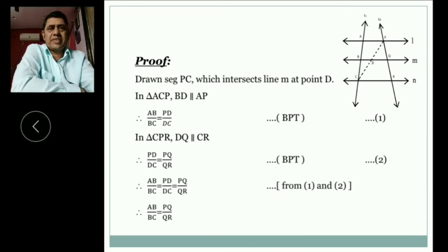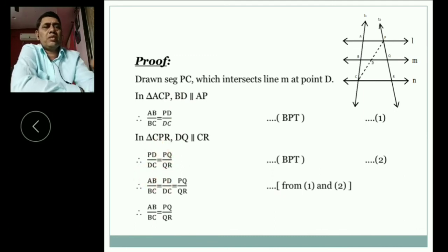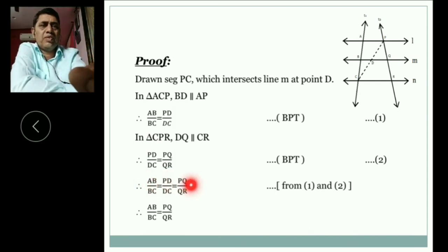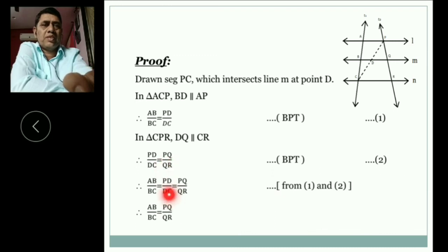From first and second, look carefully, in that PD upon DC is same term here. So one term is same, therefore remaining two are equal. So we write these three terms in this way. We cancel these terms, then we get AB by BC is equal to PQ by QR. Hence proved.